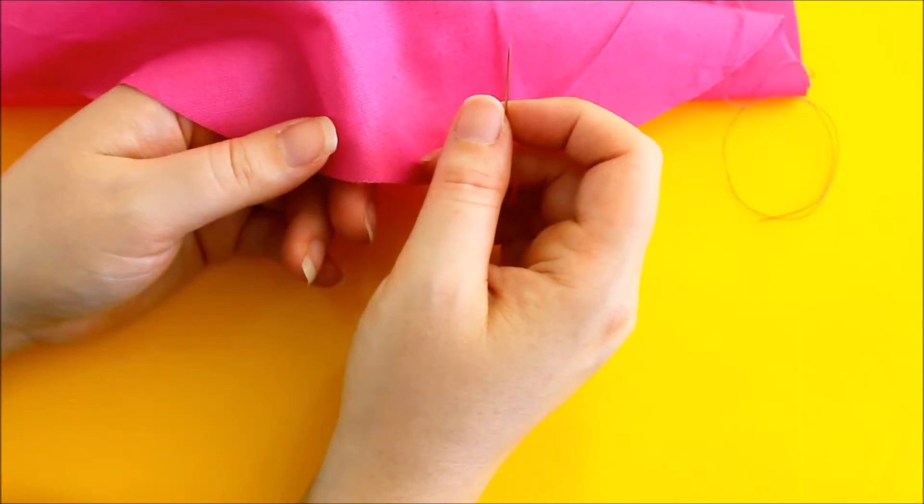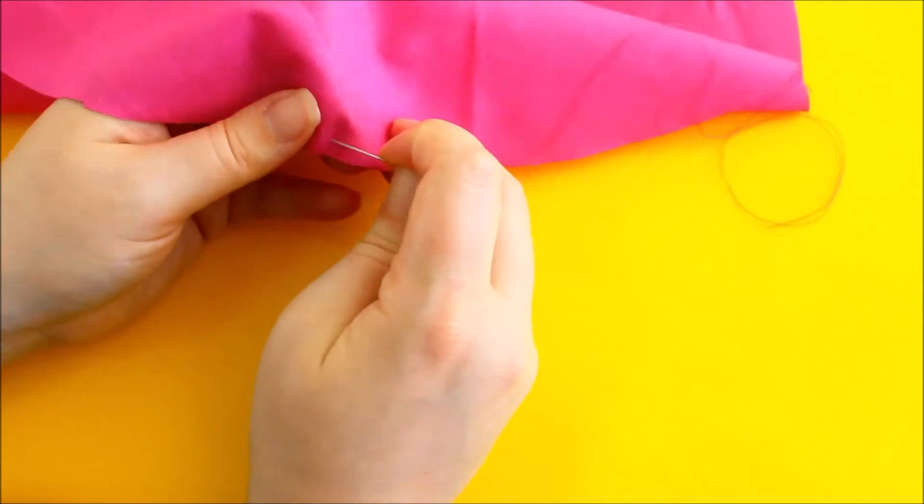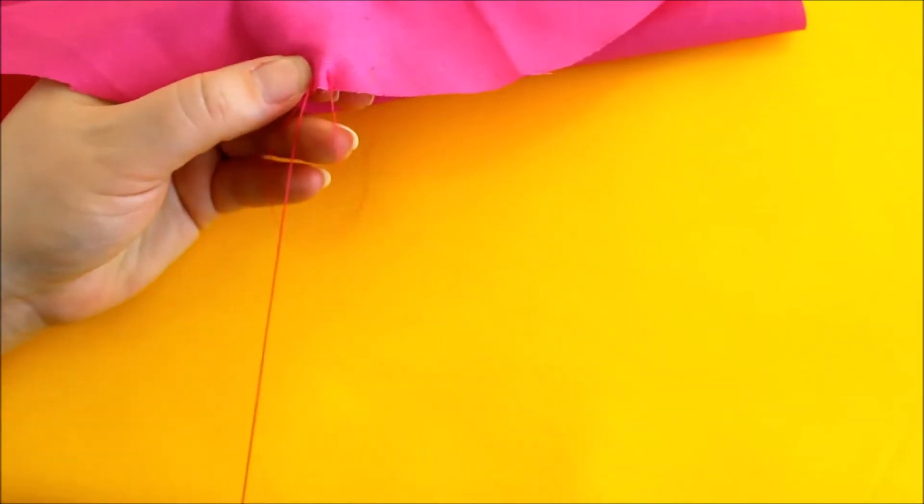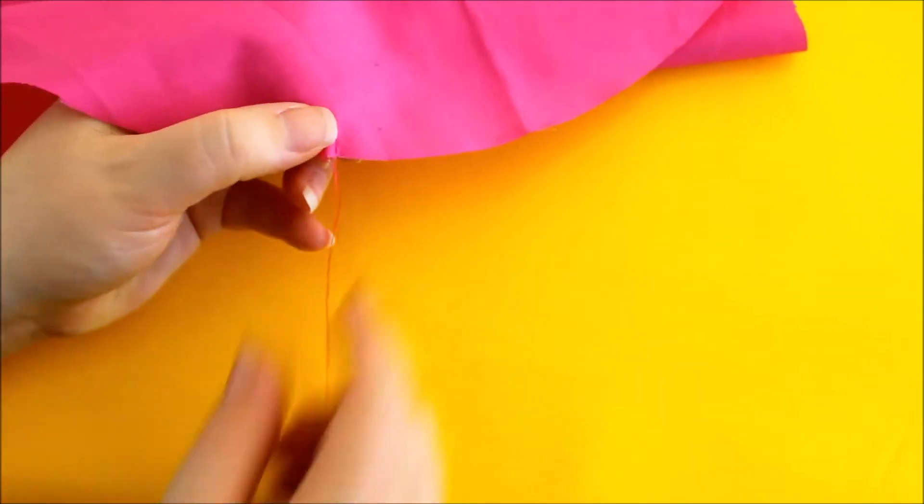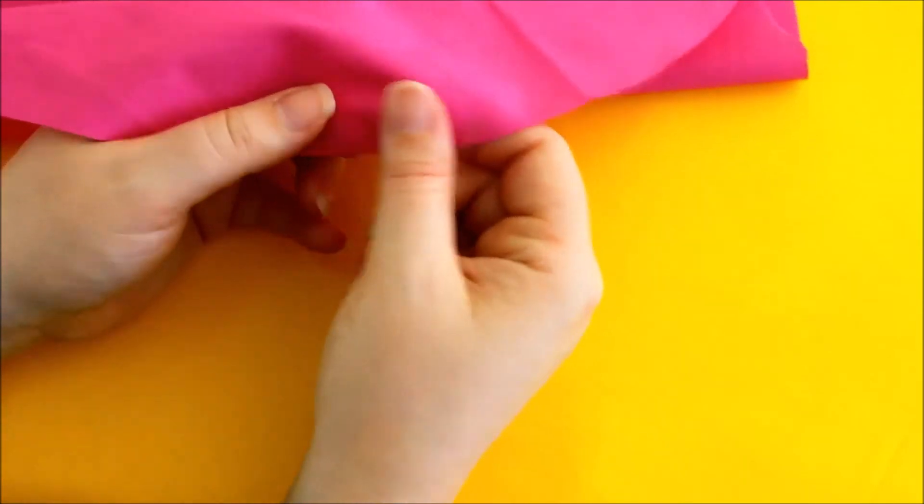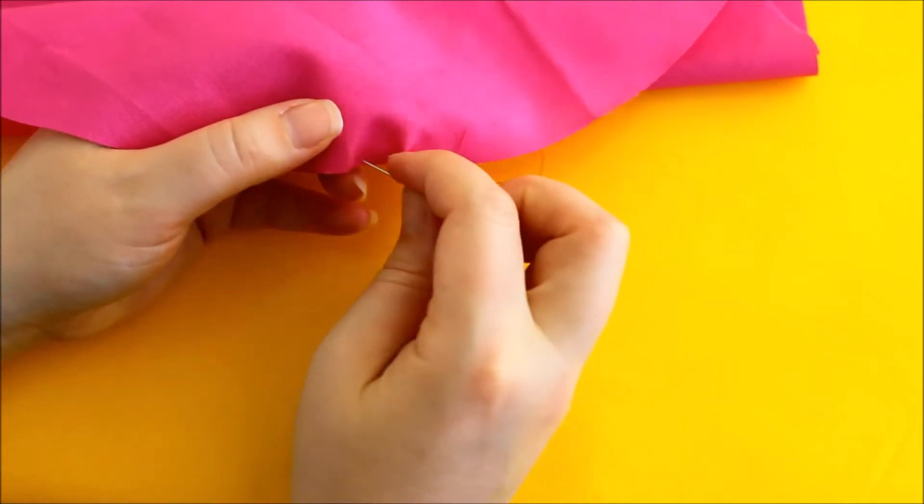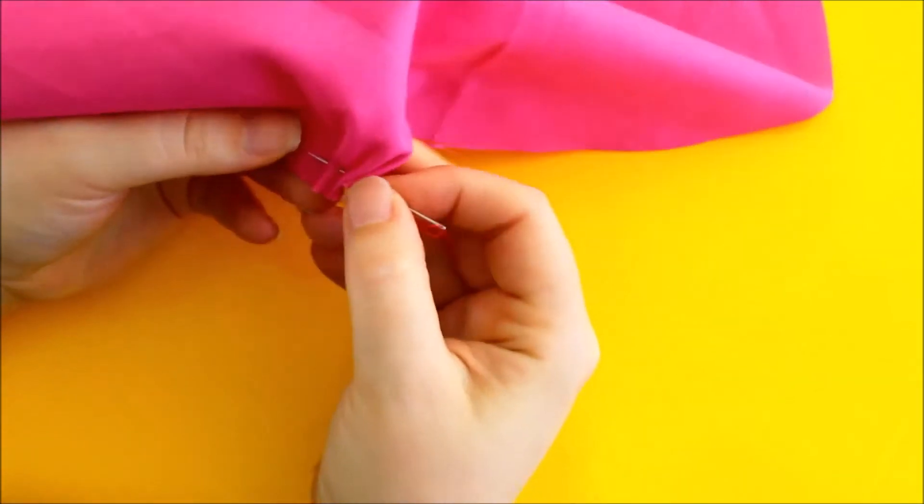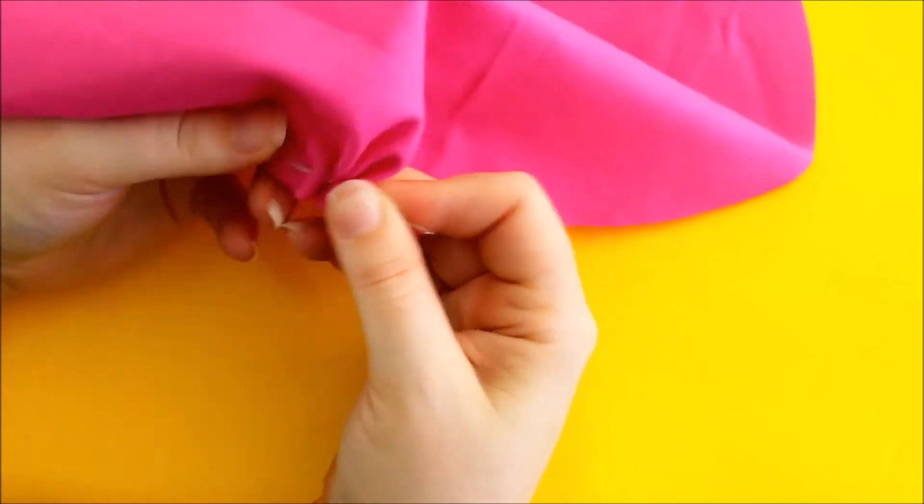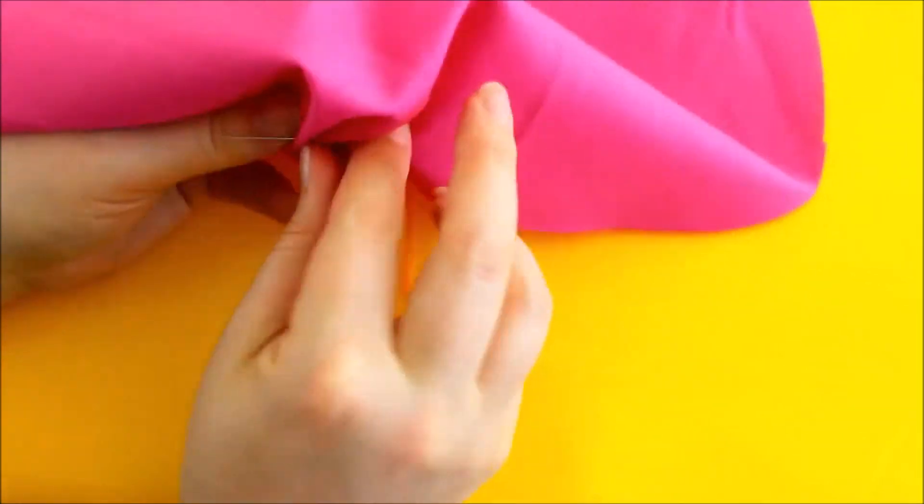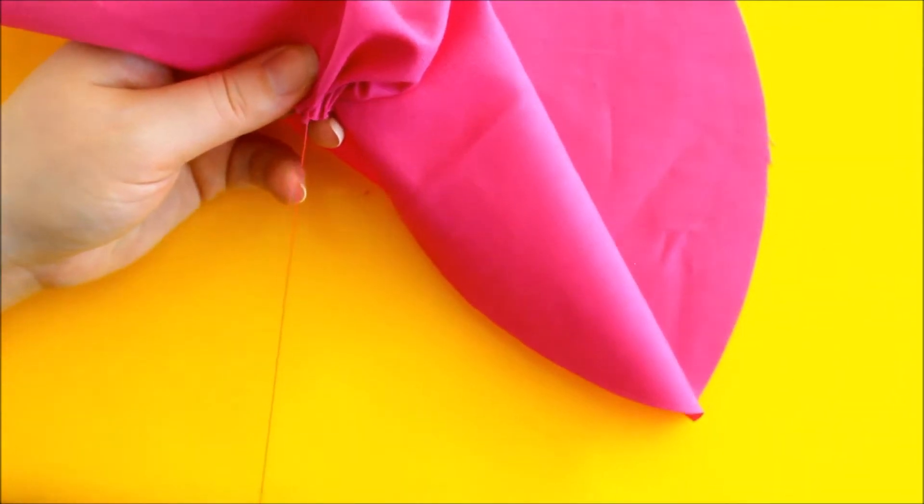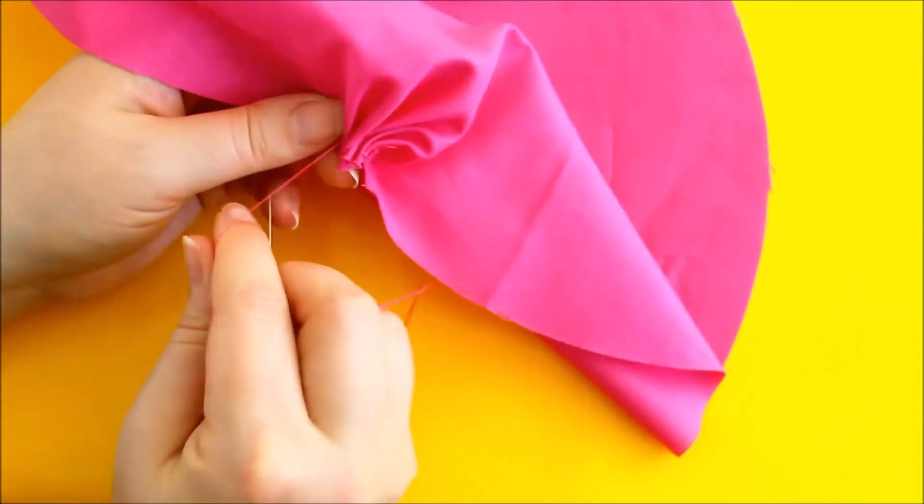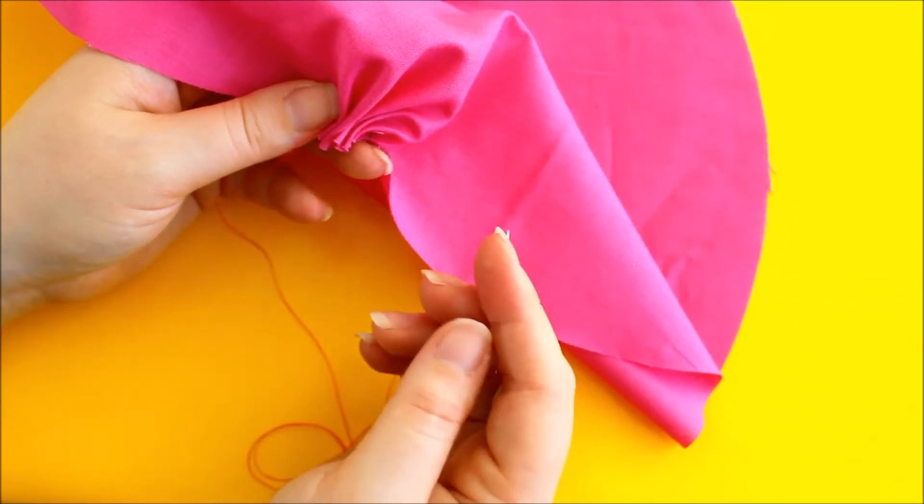And next we're going to hand sew around the edges of the petal. So if we just make a knot in here first, and then we're going to sew a really loose running stitch all the way around the edge. Now as you're sewing, you want to try and make sure that you keep the end fairly gathered up. It doesn't have to be perfectly neat.